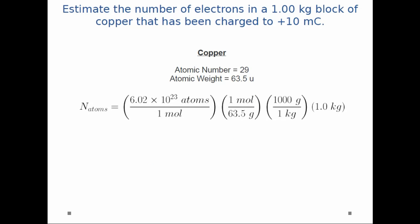First, I'm going to calculate the number of atoms in my block of copper. I start with Avogadro's number, 6.02 times 10 to the 23rd atoms per mole. Then I convert that into atoms per gram using the atomic weight: 1 mole is 63.5 grams. Then I convert the weight to kilograms: 1,000 grams is 1 kilogram.